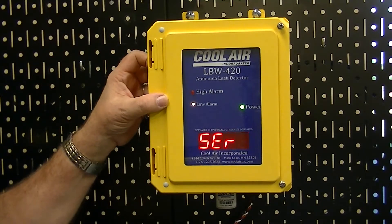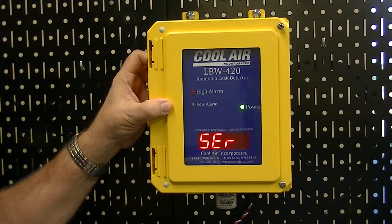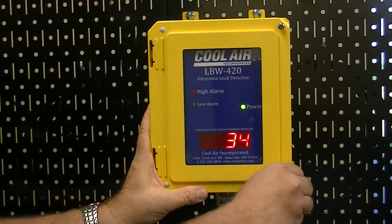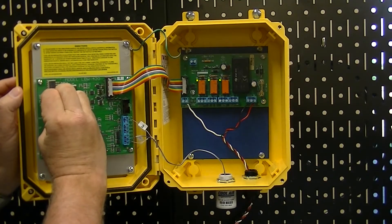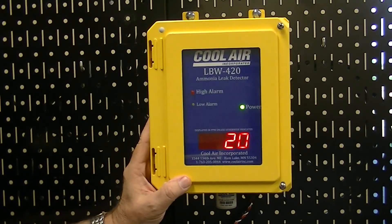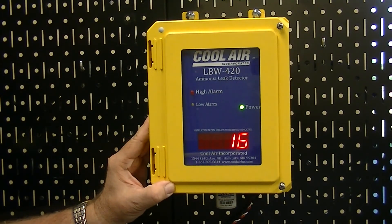Once the detector is reading below the low alarm set point you can move the service mode jumper back to the off position. This completes the calibration of the LBW 420 with the electrochemical sensor.